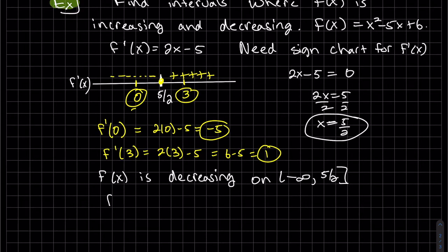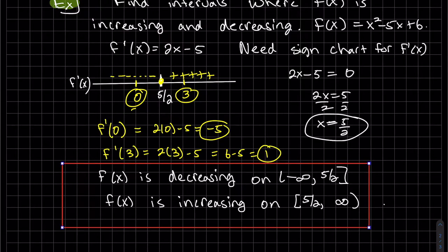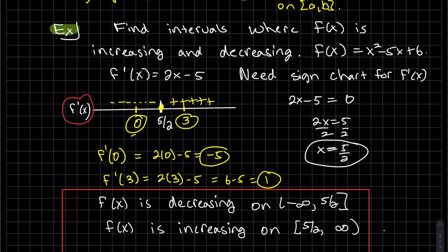So to answer our question: our function is decreasing where the derivative is negative, on negative infinity to 5/2. Our function is increasing where the derivative is positive. Positive means increasing, negative means decreasing. We know this is testing increase and decrease — decreasing there, increasing there.